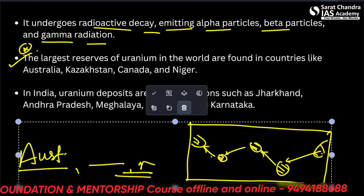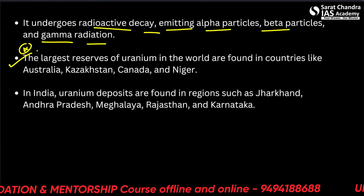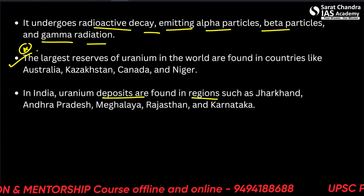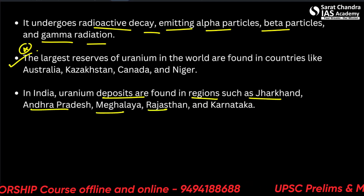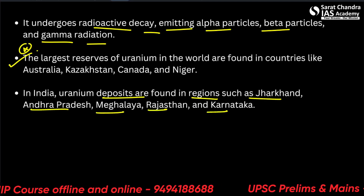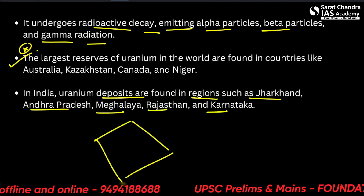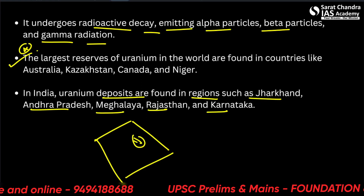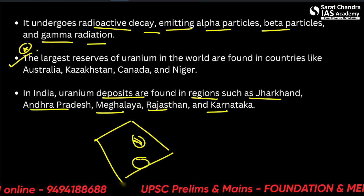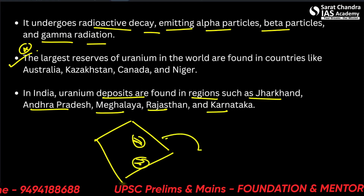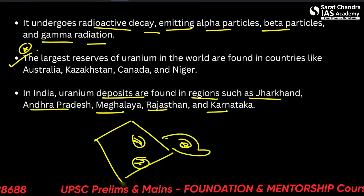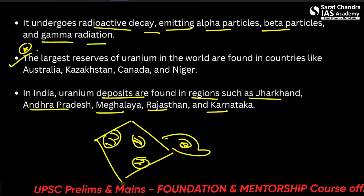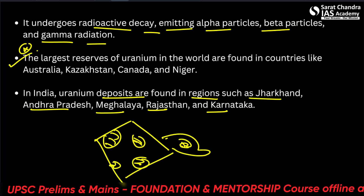In India, uranium deposits are found in regions such as Jharkhand, Andhra Pradesh, Meghalaya, Rajasthan, and Karnataka. You can always make a map whenever you are writing answers.